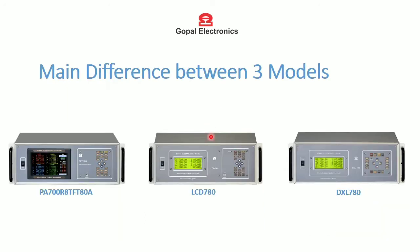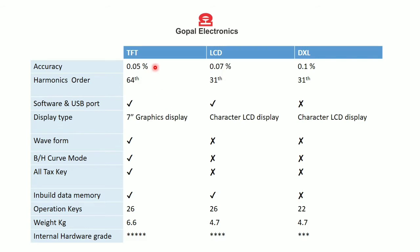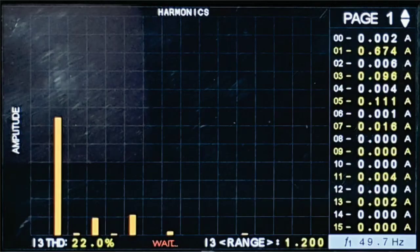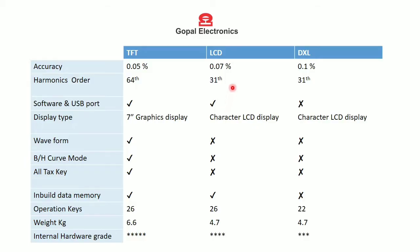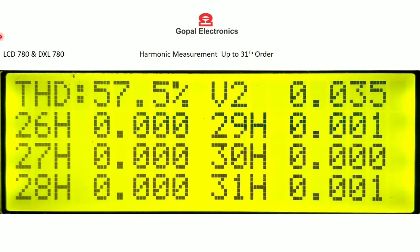The main differences between all three models: accuracy of the TFT model is 0.05%, accuracy of the LCD model is 0.07%, and accuracy of the DXL model is 0.1%. The TFT model can measure harmonics up to the 64th order, whereas the LCD and DXL models can measure harmonics up to the 31st order.